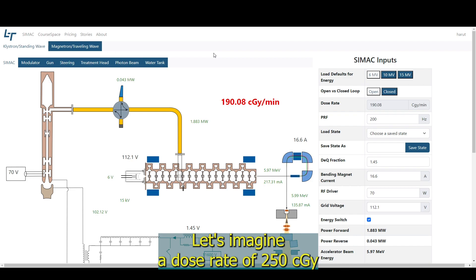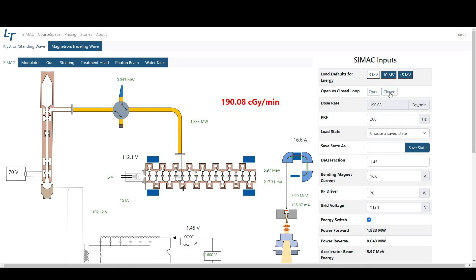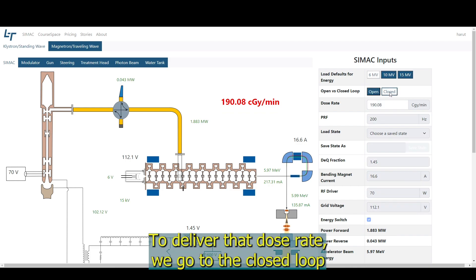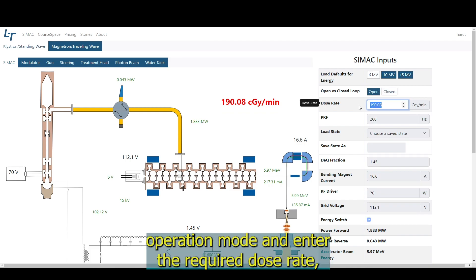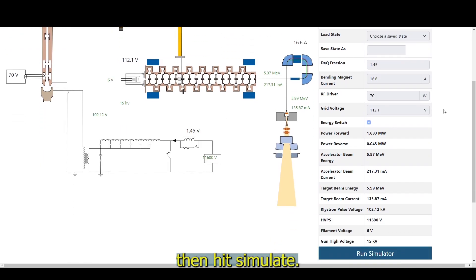Let's imagine a dose rate of 250 centigrade per minute is required on a klystron-based LINAC. To deliver that dose rate, we go to the Closed Loop Operation mode and enter the required dose rate. Then hit Simulate.